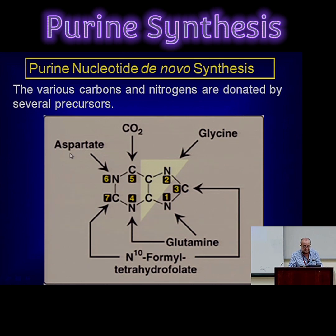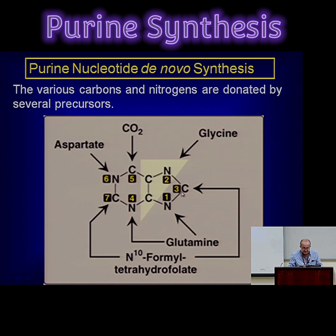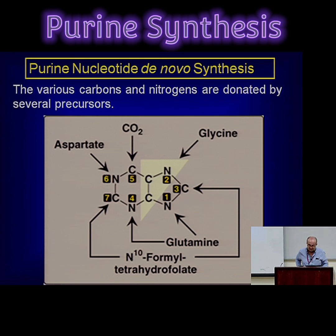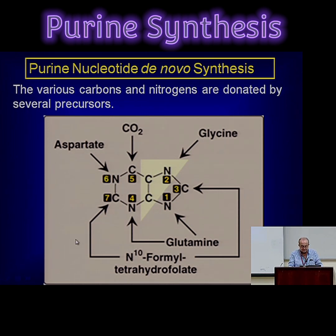Just know three amino acids are needed for purine nucleotide synthesis: glycine, glutamine, and aspartate. Also importantly, I want you to pay attention to these carbons, which are coming from THF — tetrahydrofolate — what we just talked about as the active form of folic acid. So without tetrahydrofolate, purine nucleotides cannot be synthesized. That's how important THF is.